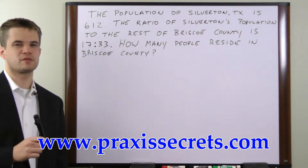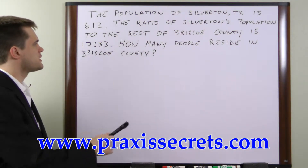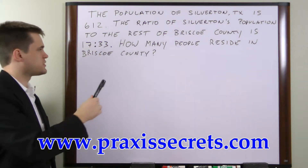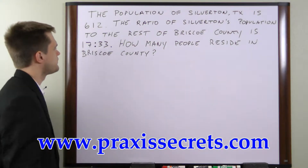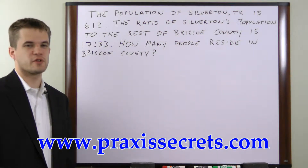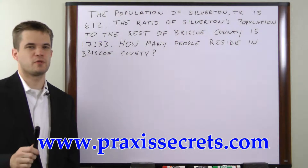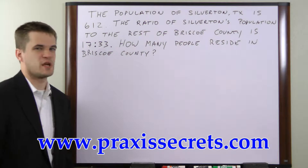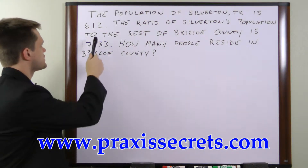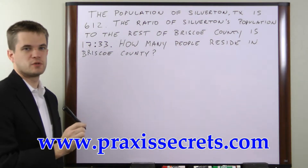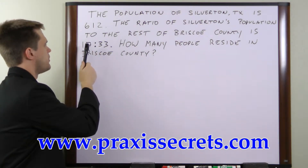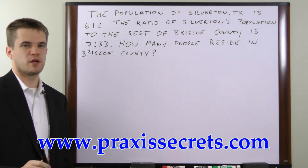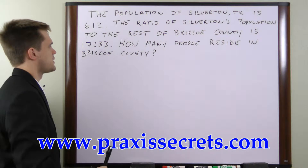In this ratio problem, we're asked to find the total population of a county given the population of one town and the ratio of that town's population to the rest of the county. The key to this, like most other ratio problems, is to figure out how many people each one in this ratio represents. We're going to divide the population by the number in the ratio that represents the town, and that will tell us how many people each one in the ratio represents.